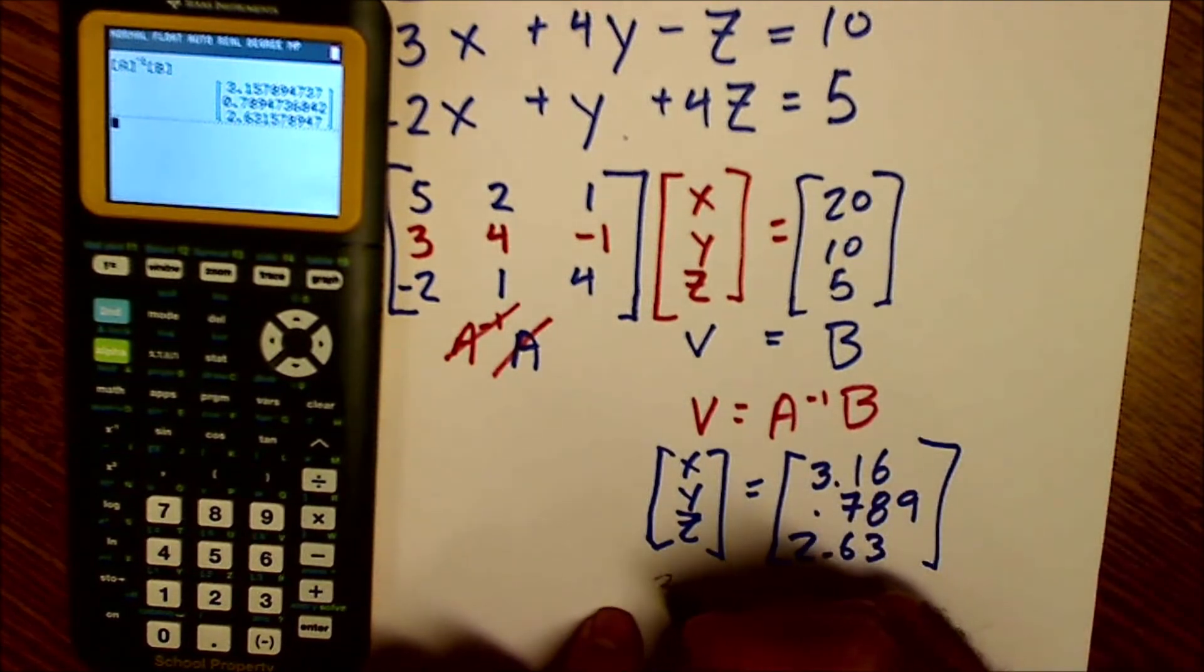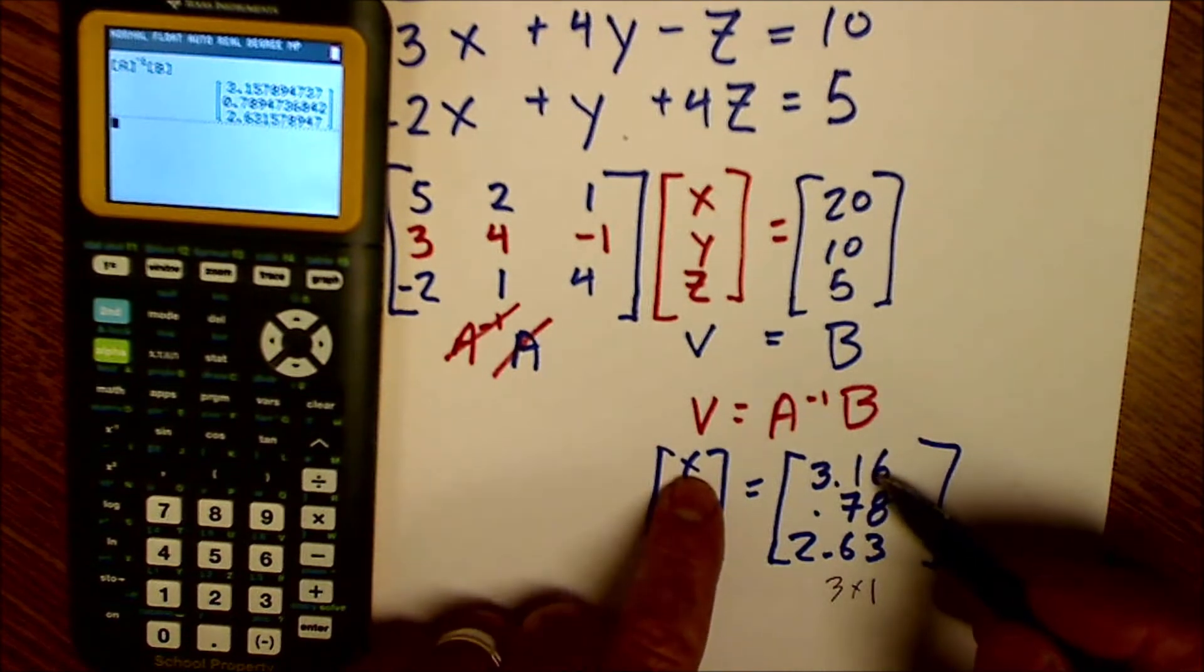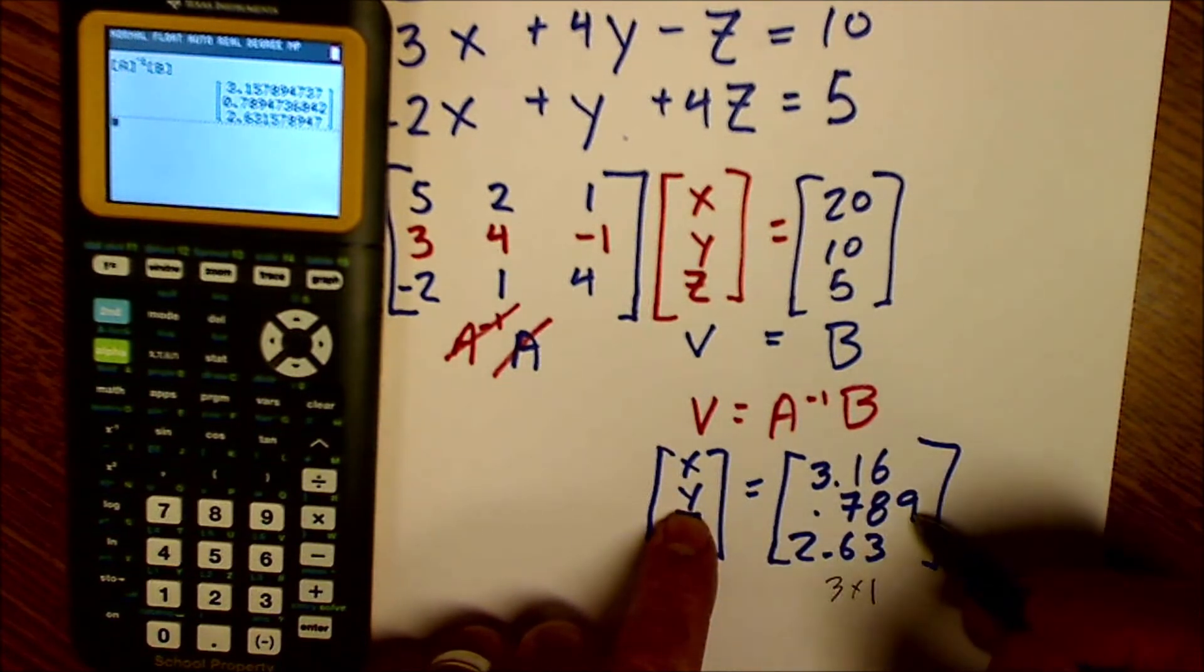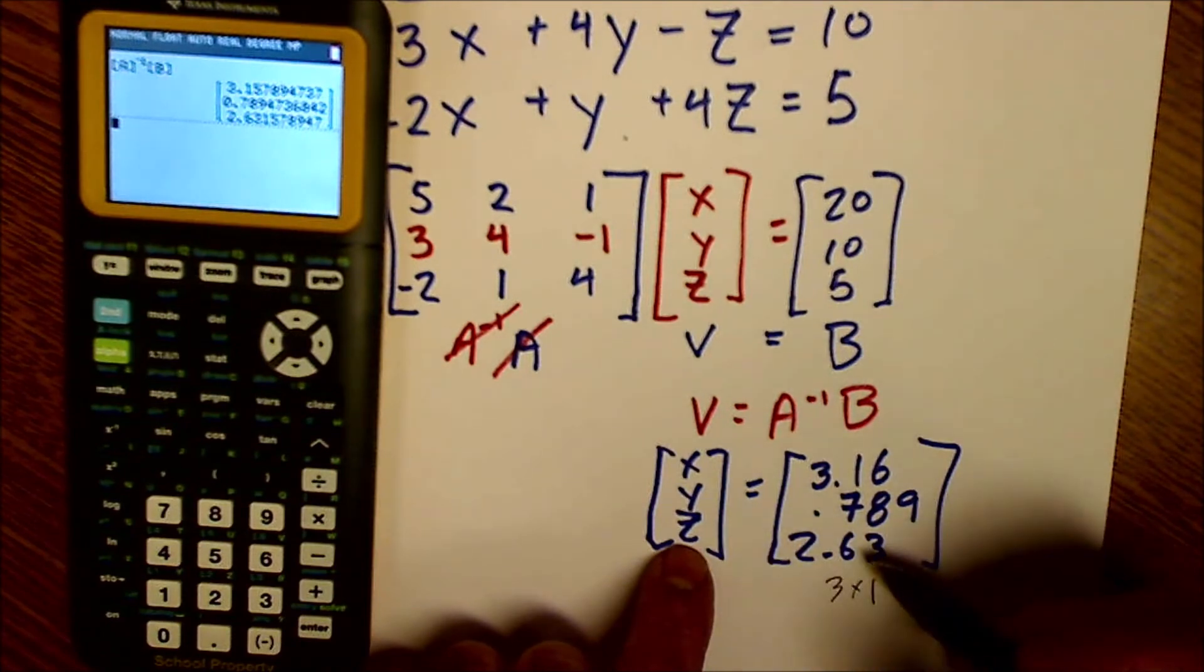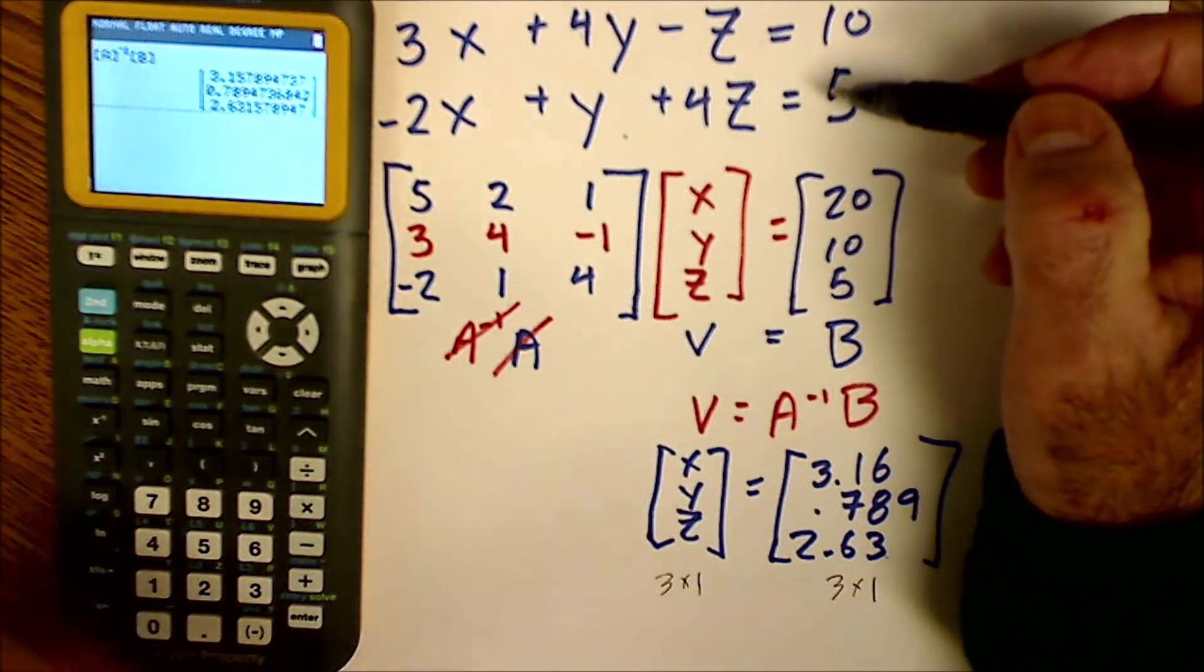So that means if my variable matrix is equal to my solution matrix, and they're both three by ones, that all makes sense. That means the elements have to be equal. So X has to equal 3.16. There's my first solution for X. Y has to equal 0.79, my solution for Y. And Z is equal to 2.63. So I'm able to solve systems of equations with matrices.